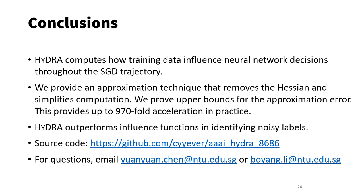In conclusion, we have presented the Hydra method for evaluating the contribution of training data to validation data or test data. Hydra computes how training data influence neural network decisions throughout the SGD trajectory. We provide an approximation technique that removes the Hessian matrix and simplifies computation. We prove upper bounds for the approximation error. This provides up to 970-fold acceleration in practice, though the number may change depending on the underlying hardware. The experiments show that the approximation error of Hydra is small, which verifies the theoretical result. Hydra also outperforms influence function in identifying noisy labels. We have open sourced the code for download. For any questions, please feel free to email us. Thank you for your attention.